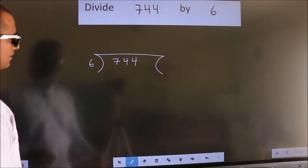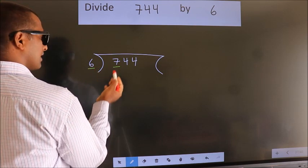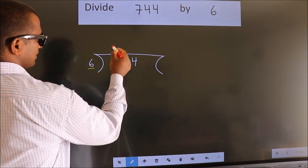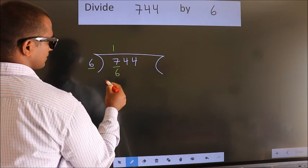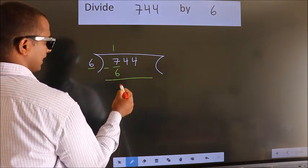Next. Here we have 7, here 6. A number close to 7 in 6 table is 6 1s, 6. Now we should subtract. We get 1.